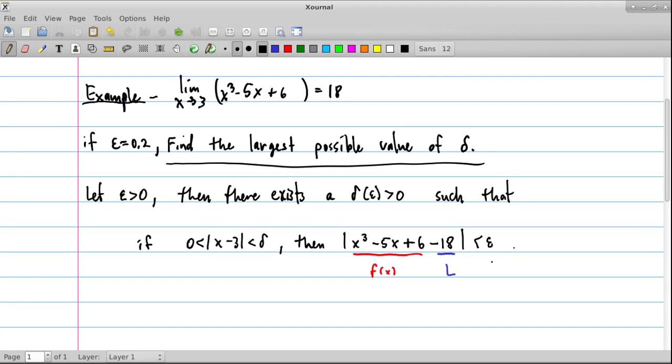So in this scenario, we're told that this number is supposed to be 0.2, and our job is to find or approximate this number. So we want to find the delta that ensures that we're going to be this close to the limit. So that's our job, to find this.